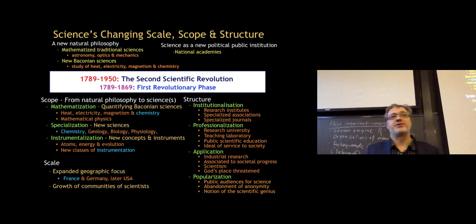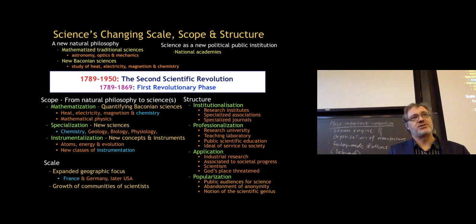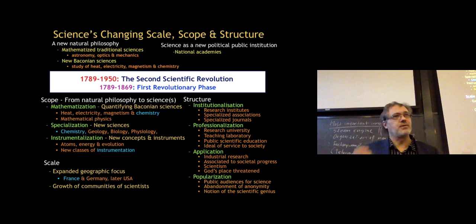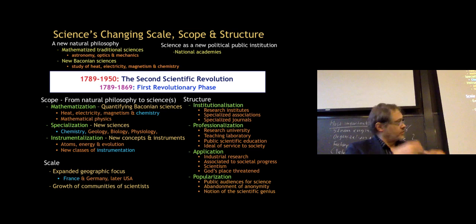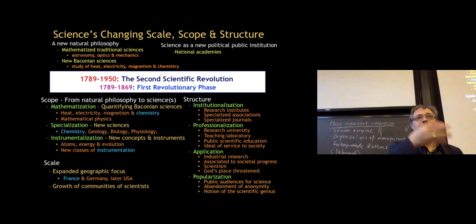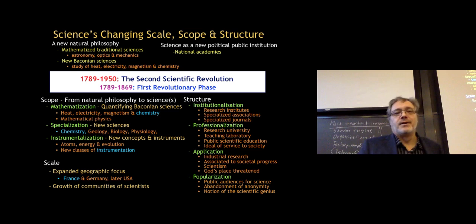The structure of science is also changing during this period — there's an institutionalization with new research institutes, specialized associations of scientists, and the Association for the Advancement of Science, set up in the early 19th century. Specialized scientific journals multiply — the Philosophical Transactions of the Royal Society goes back to the 17th century, but now more and more fields have specialized journals. The scientific article itself evolved from scientists exchanging letters, which were then published because their content was seen as broadly interesting to other scientists.